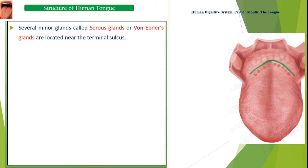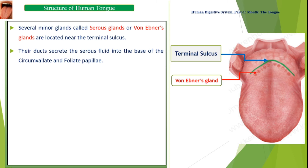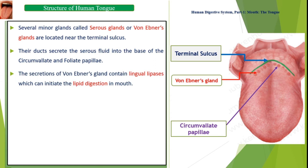Several minor glands called serous glands, or Von Ebner's glands, are located near the terminal sulcus. Their ducts secrete serous fluid into the base of the circumvallate and foliate papillae. The secretions of Von Ebner's glands contain lingual lipases, which can initiate lipid digestion in the mouth.